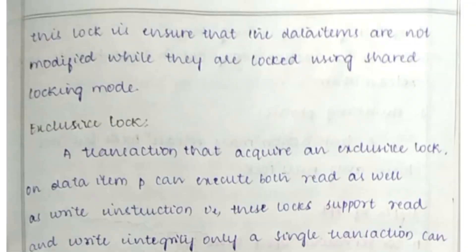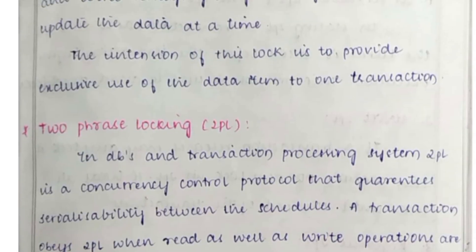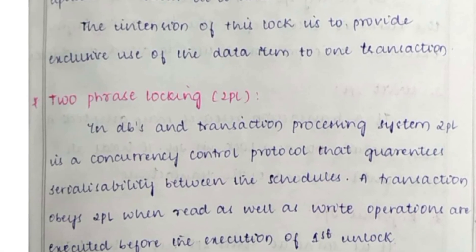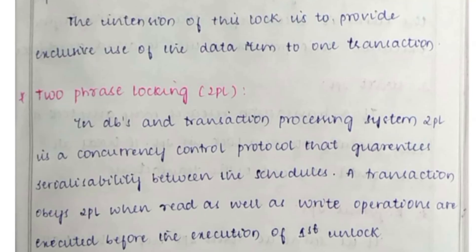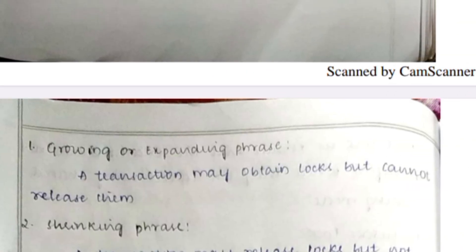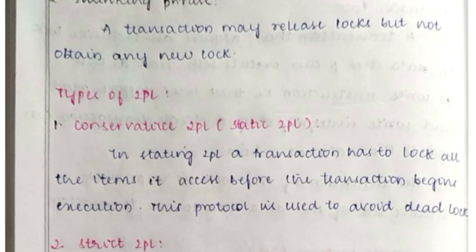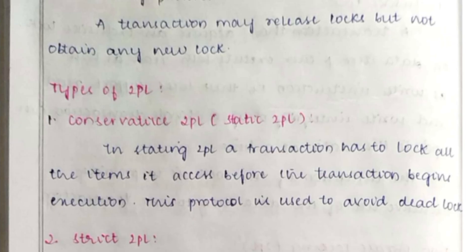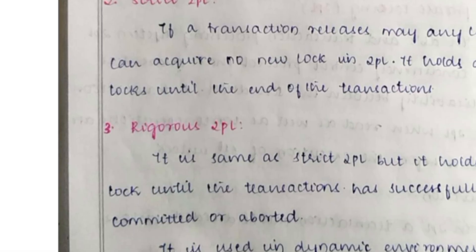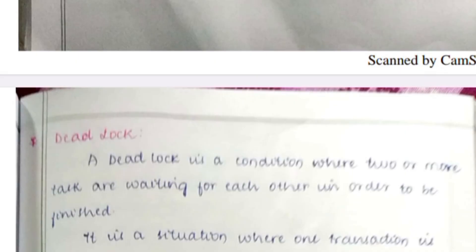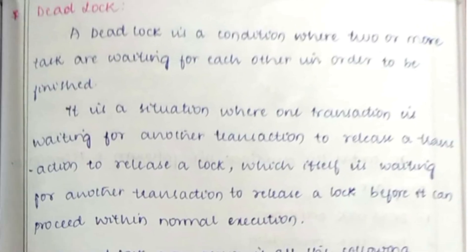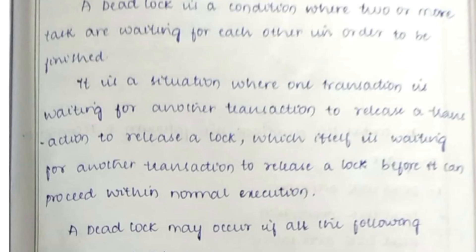Next is the two-phase locking system (2PL), which is also an important topic. There are three types: Strict 2PL, Conservative 2PL, and Rigorous 2PL.